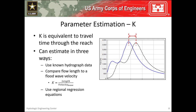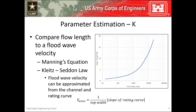Finally, regression equations relating parameters like slope, roughness, and length are available in some regions and can be used to infer this parameter. A value for k can be estimated as the travel time of the flood wave through the routing reach. The flood wave velocity can be estimated using Manning's equation or the Clyté-Seddon law. The Clyté-Seddon law allows you to approximate flood wave velocity from a stage-flow rating curve at a representative location for the routing reach. This method requires you to estimate the slope of the rating curve and the top width, both at the flow rate of interest. In the image to the right, the flow rate of interest is 10,000 CFS. The slope at this point can then be estimated, and the top width must also be estimated for this flow rate using aerial photos, field surveys, or backwater calculations.